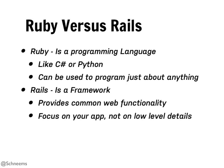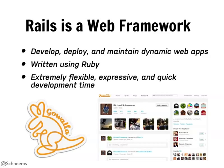Ruby is very expressive. If you haven't opened your book yet and actually seen Ruby, you can read it relatively easily. Rails is a framework that's actually built on top of Ruby. Rails is meant to code dynamic webpages, like Gowalla or Twitter. The whole idea is that you want to focus on your app and not the low-level details.